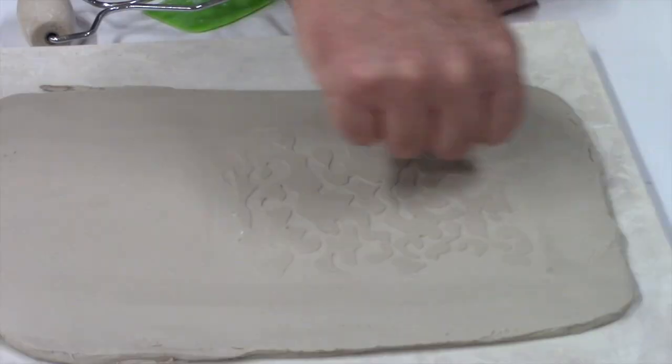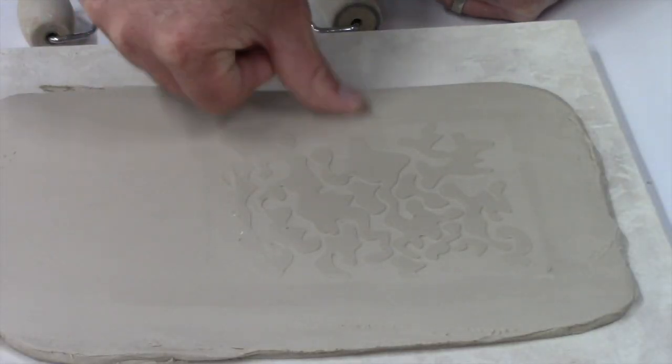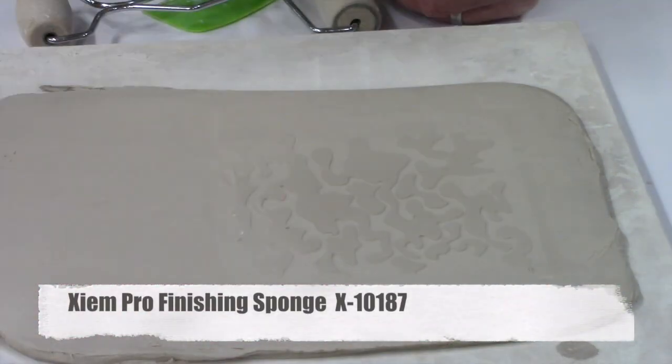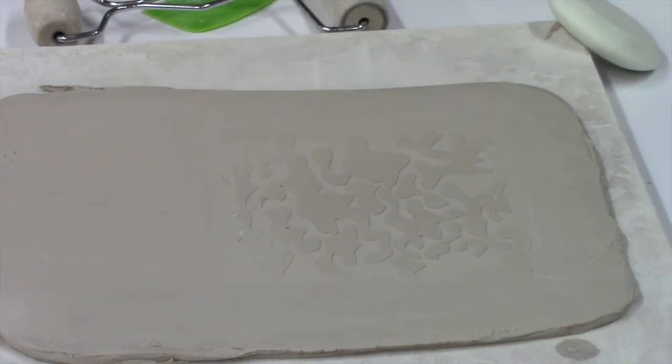You can take your finger and smooth out the edges and get rid of that indentation, or you can take a SIM finishing sponge and rub out those indentations so that it looks like a smooth design.